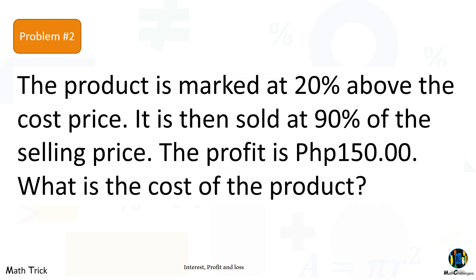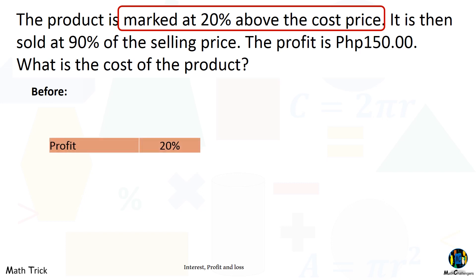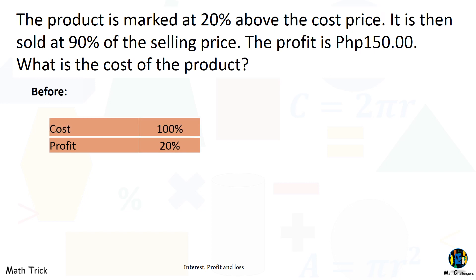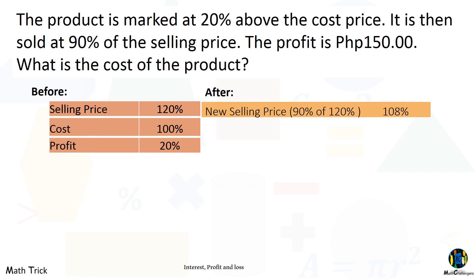Problem number 2. The product is marked at 20% above the cost price. It is then sold at 90% of the selling price. The profit is 150 pesos. What is the cost of the product? Based on the problem, the product is marked at 20% above the cost price, so the profit rate is 20%. The cost is 100% and the selling price is 120% of the cost. It is then sold at 90% of the selling price — meaning 90% of 120%, which gives a new selling price of 108% of the cost.